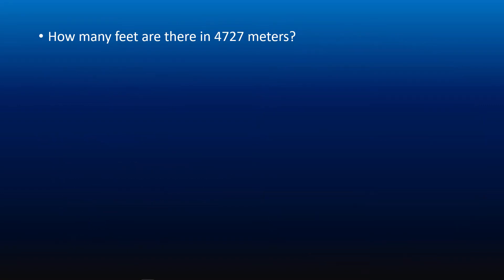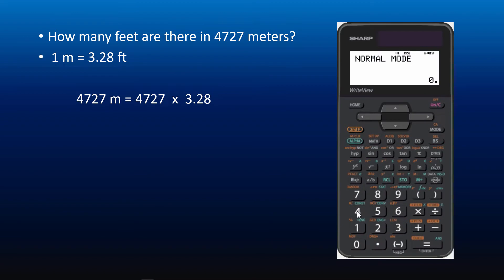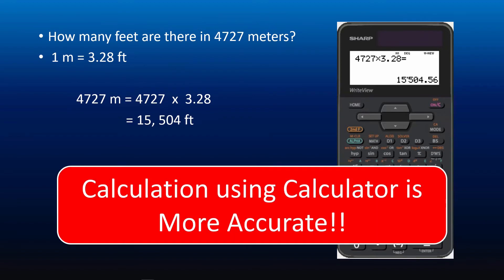Now let's work out the same question using a calculator. We know that 1 meter is equal to 3.28 feet. So 4,727 meters equals 4,727 times 3.28, giving 15,504 feet. As you can see, calculation using a calculator is faster and more accurate. However, CRP5 can help you remember the conversion factor.